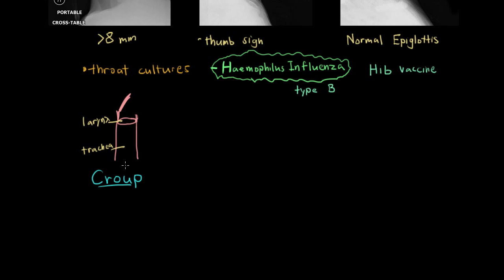So croup is tracheolaryngitis. So it includes the larynx, which is where the voice box is. And the trachea, which is the windpipe just below the larynx. Whereas epiglottitis is really only swelling of the epiglottis and the aryepiglottic folds and arytenoid. So everything kind of above the larynx. Now with croup it's swelling of the larynx and the trachea. So you'll still get stridor because you have narrowing of this airway right here. So you'll still get that musical noise of air trying to force its way into the lungs. And you'll also see that of course with epiglottitis.